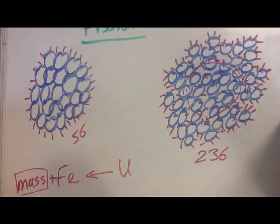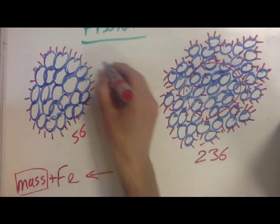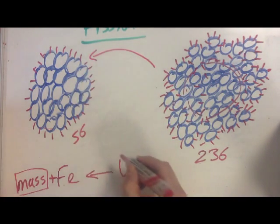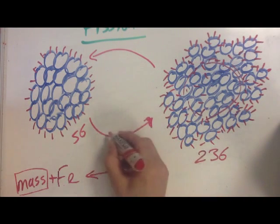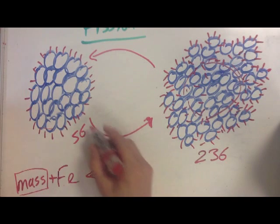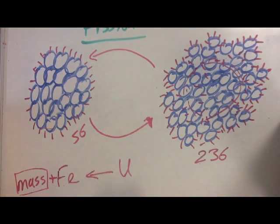This mass deficit, which is equal to the binding energy—mass deficit goes this way so this gets lighter, which means this requires more energy per nucleon to hold it together. Hope that helps.